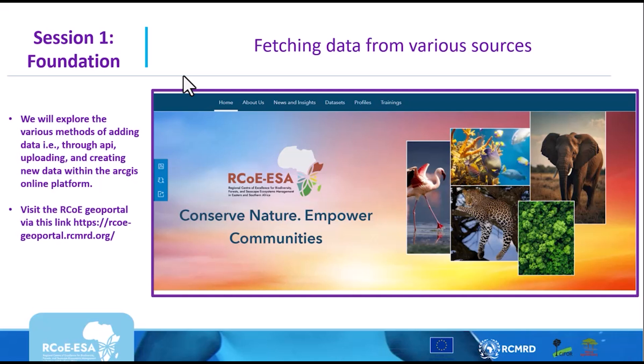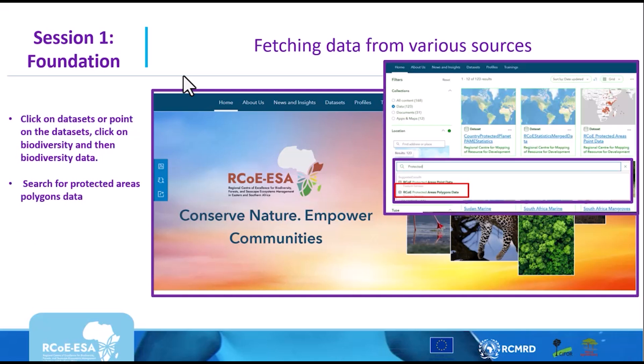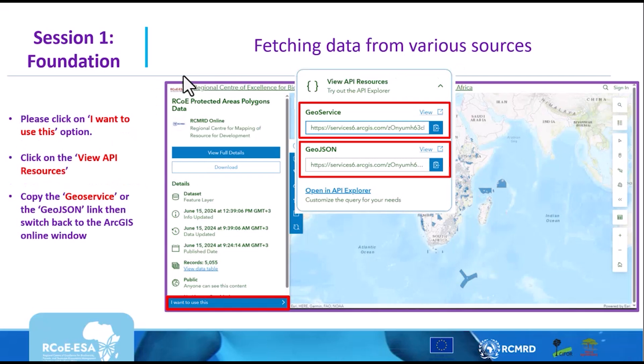Go to the link provided on your screen and it will take you to the Geoportal. On the Geoportal, click on Datasets, and it will show you the various datasets hosted there. Search for a dataset called RCOE Protected Areas Polygons. Once you find it, click on it. You will find a section on the left called View API Resources. Click on it, and it will give you two options: a GeoService link and a GeoJSON link.